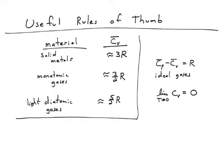So, solid metals around three R, monatomic gases here at three halves R, and light diatomic gases here at five halves R. And the reason that these are fractions of R is there's a theory in physics, or a theorem in physics, called the Equipartition Theorem that says you should be able to, once you unlock all your modes, so not when you're at absolute zero, but when you're at room temperature, you should be able to have one half R of heat capacity per mode of motion.